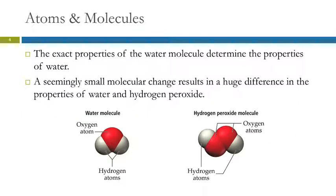So the properties of the water molecule determine the properties of the water itself. So here's water, and this is hydrogen peroxide, which is very similar to water. However, the only difference being there's one extra oxygen atom. What's the big deal? There's one extra oxygen atom. Well, that causes hydrogen peroxide to have very different properties than water.